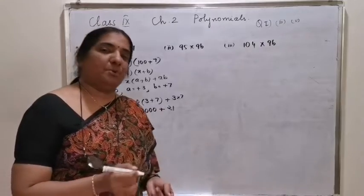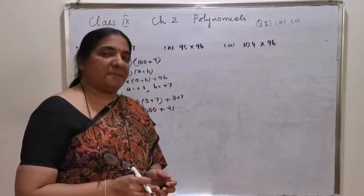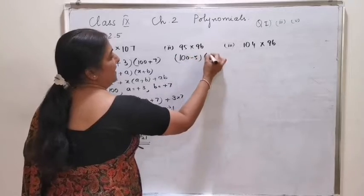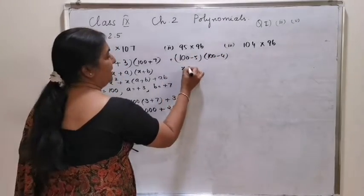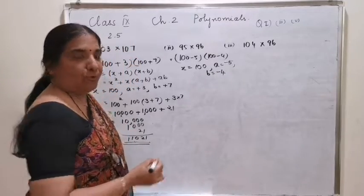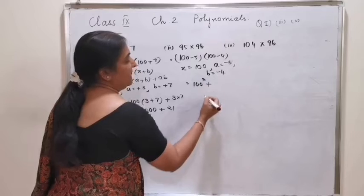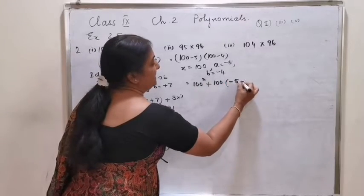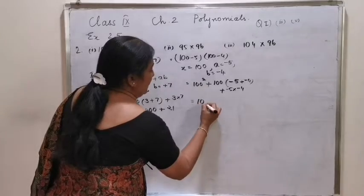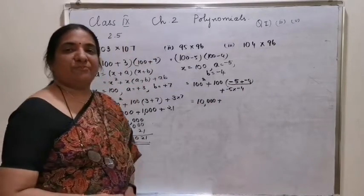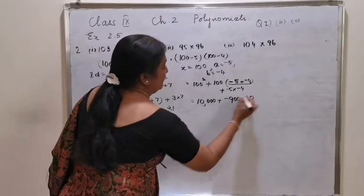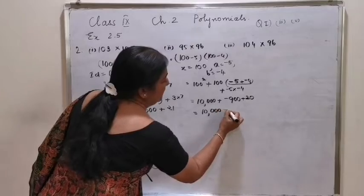95 into 96 — both ways you can do it: 90 plus 5 into 90 plus 6, or 100 minus 5 into 100 minus 4. Let's go with 100 minus 5 and 100 minus 4. Your x value is 100, a value is minus 5 and b value is minus 4. Substituting: 100 square plus 100 into minus 5 plus minus 4, plus minus 5 into minus 4. That gives 10,000 plus minus 9 into 100, which is minus 900, plus 20.